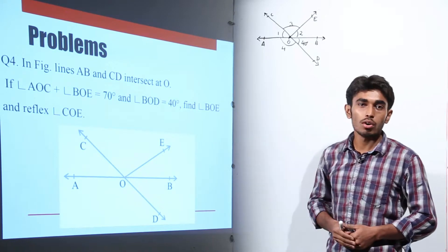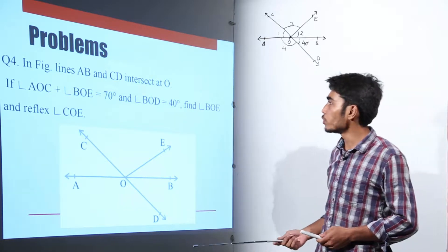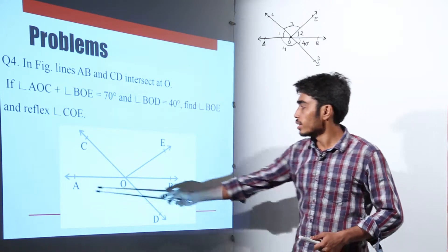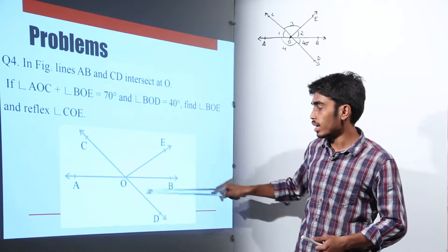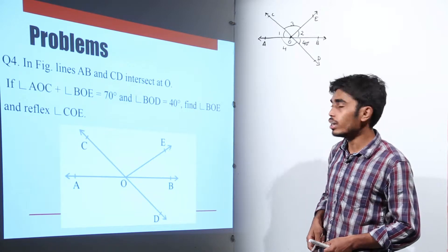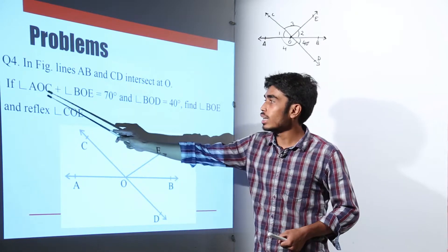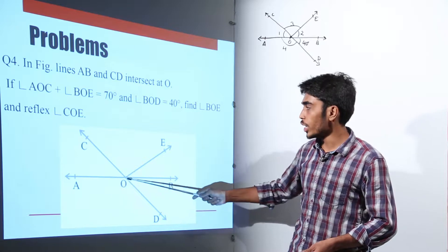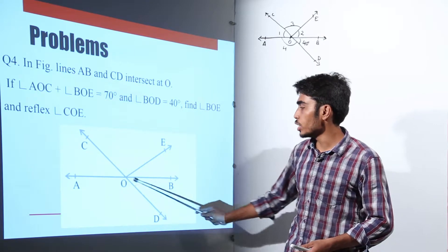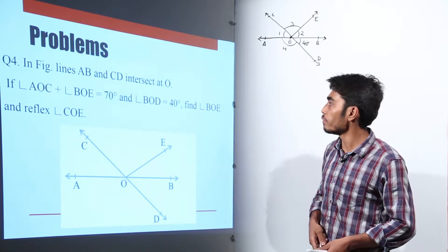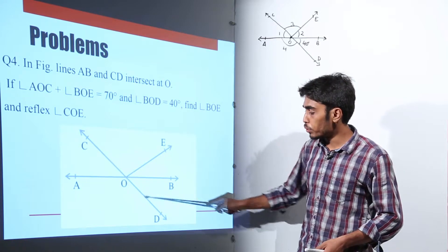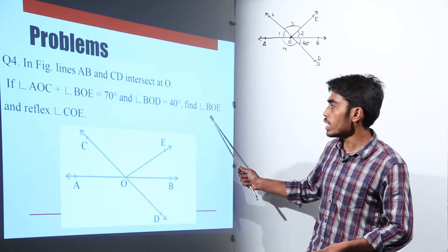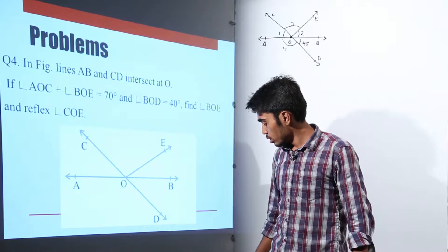Let's do another question on lines and angles. In this figure, lines AB and CD are intersecting at point O. The data given to us is: angle AOC plus angle BOE is equal to 70 degrees, and angle BOD is equal to 40 degrees. We need to find angle BOE and angle COE.